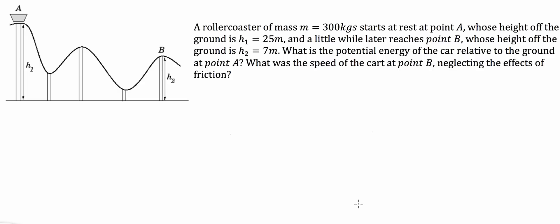Hi guys, one of the kids that I help out with physics has given me this rollercoaster question that involves kinetic and potential energy to solve. The question says: a rollercoaster of mass 300 kilos starts at rest at point A, whose height off the ground is 25 metres, and a little while later reaches point B, whose height off the ground is 7 metres. What is the potential energy of the car relative to the ground at point A?